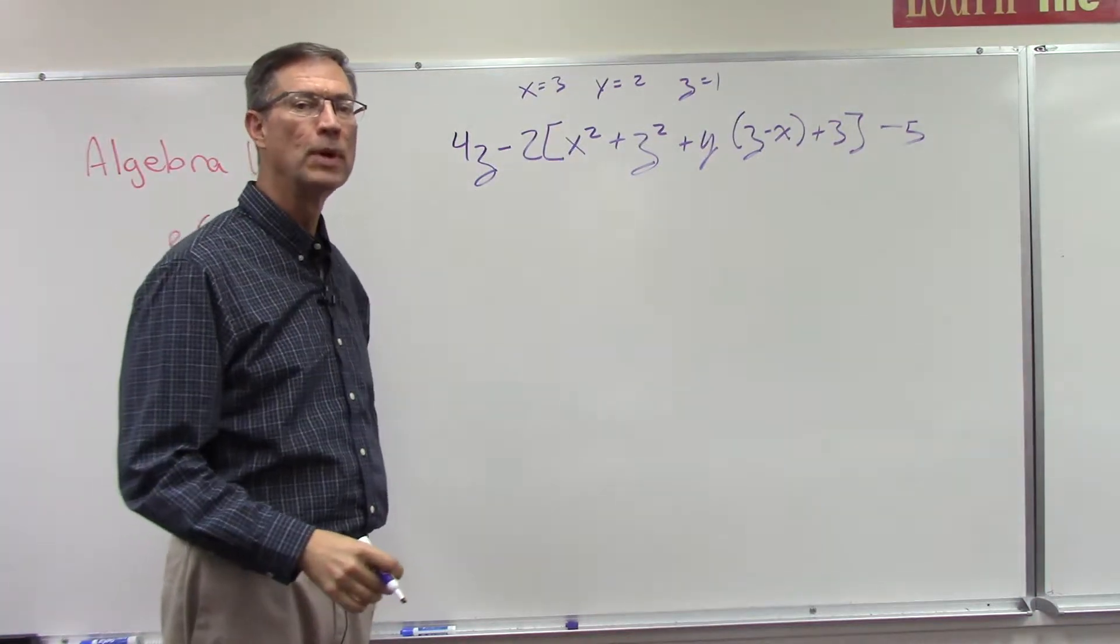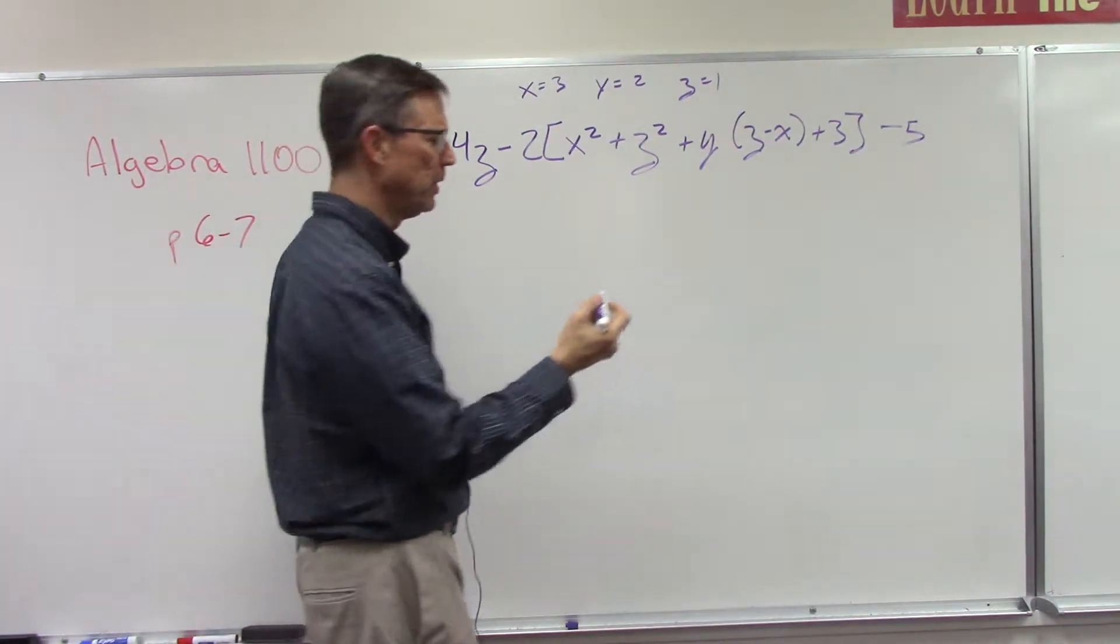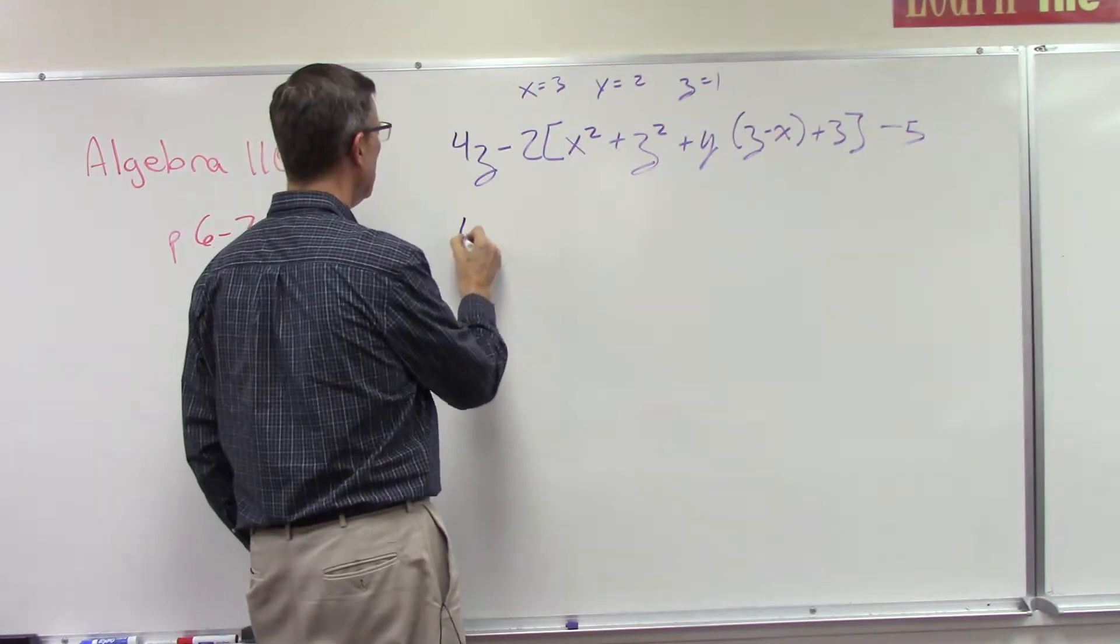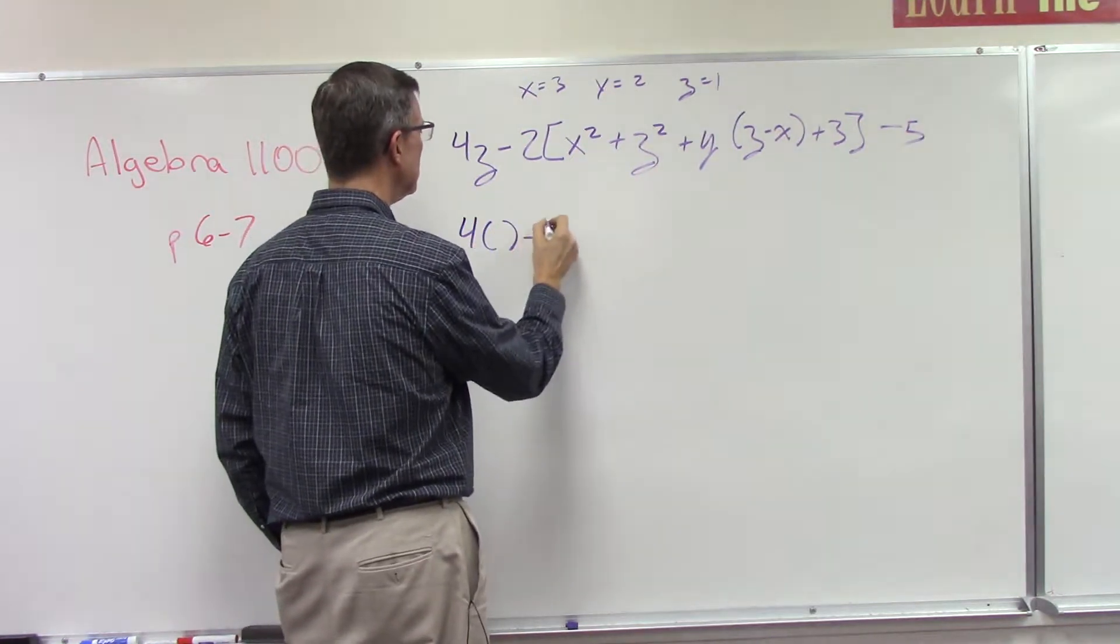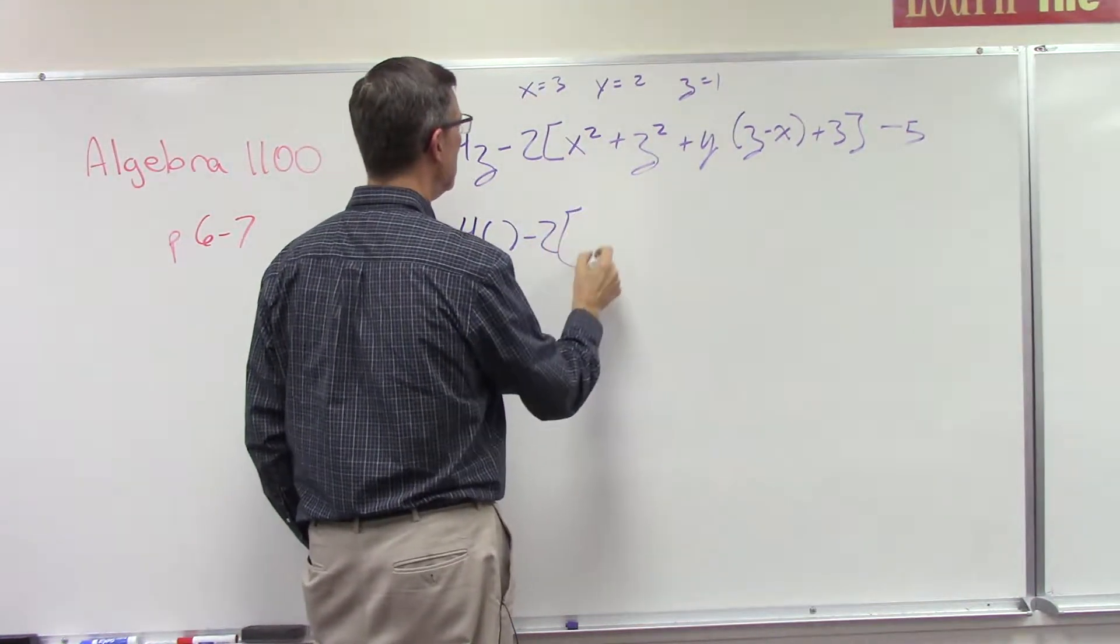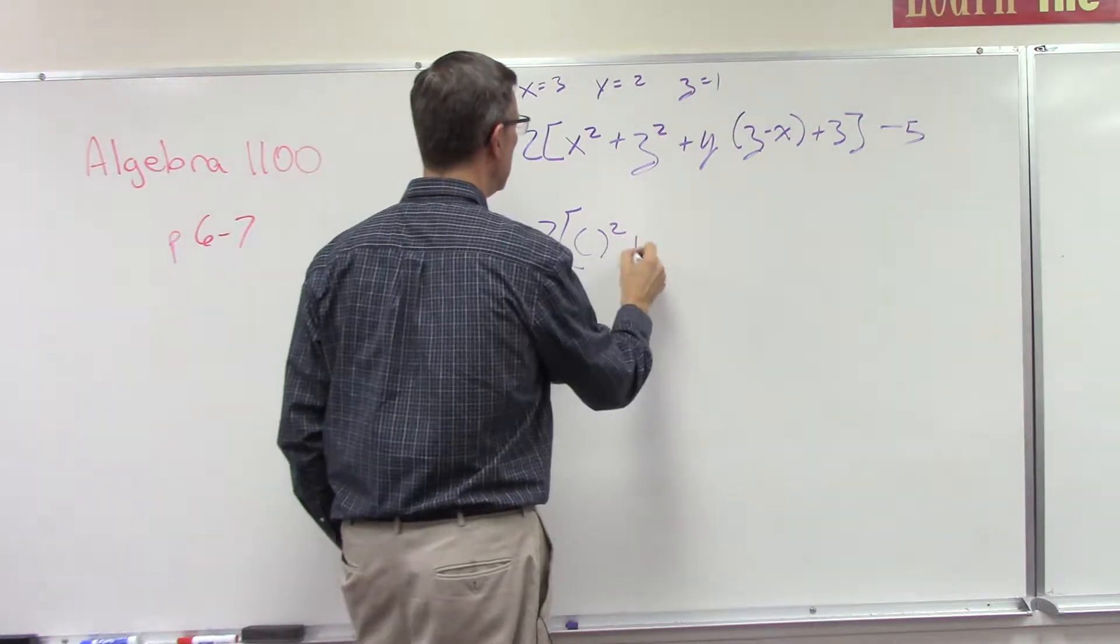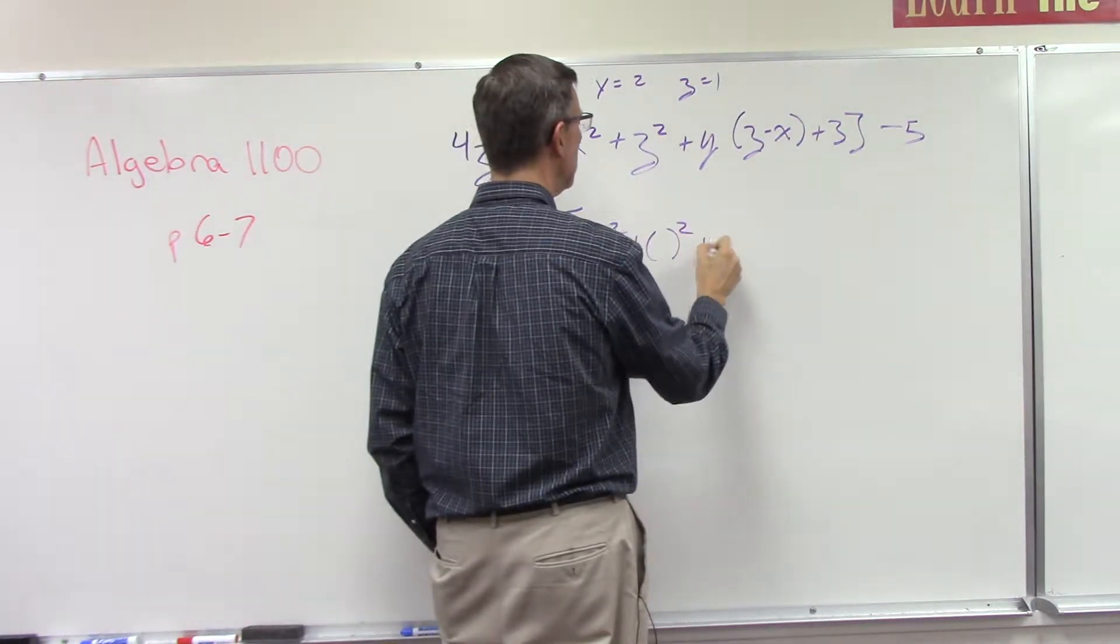I think we did that in an earlier pace, a really important step. So four parentheses minus two square bracket parentheses squared plus parentheses squared plus parentheses.